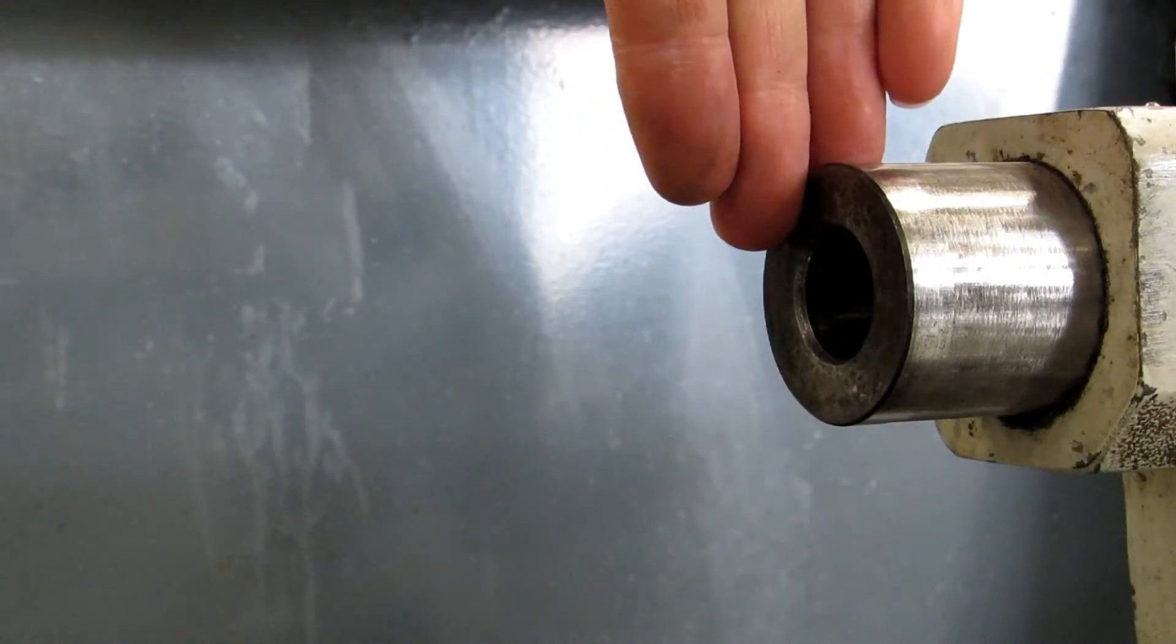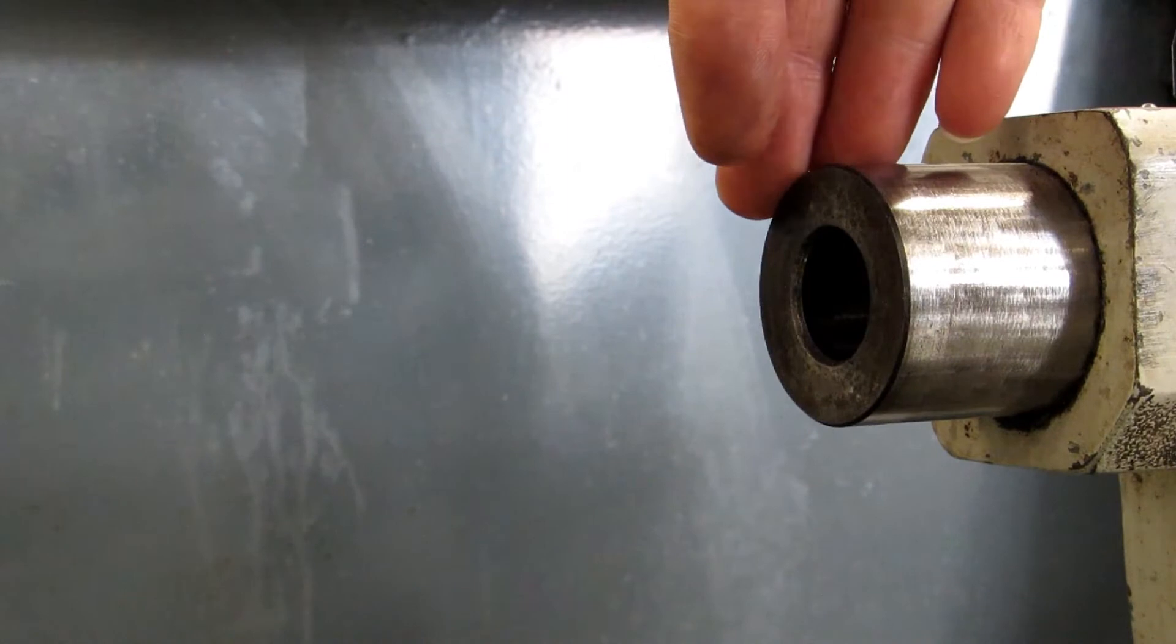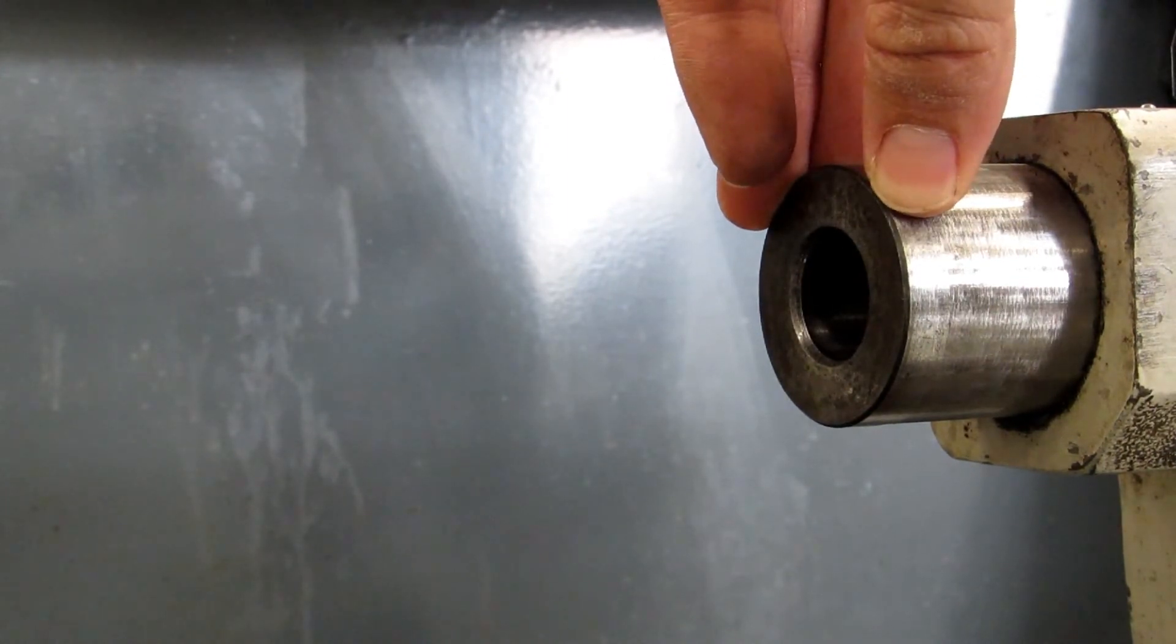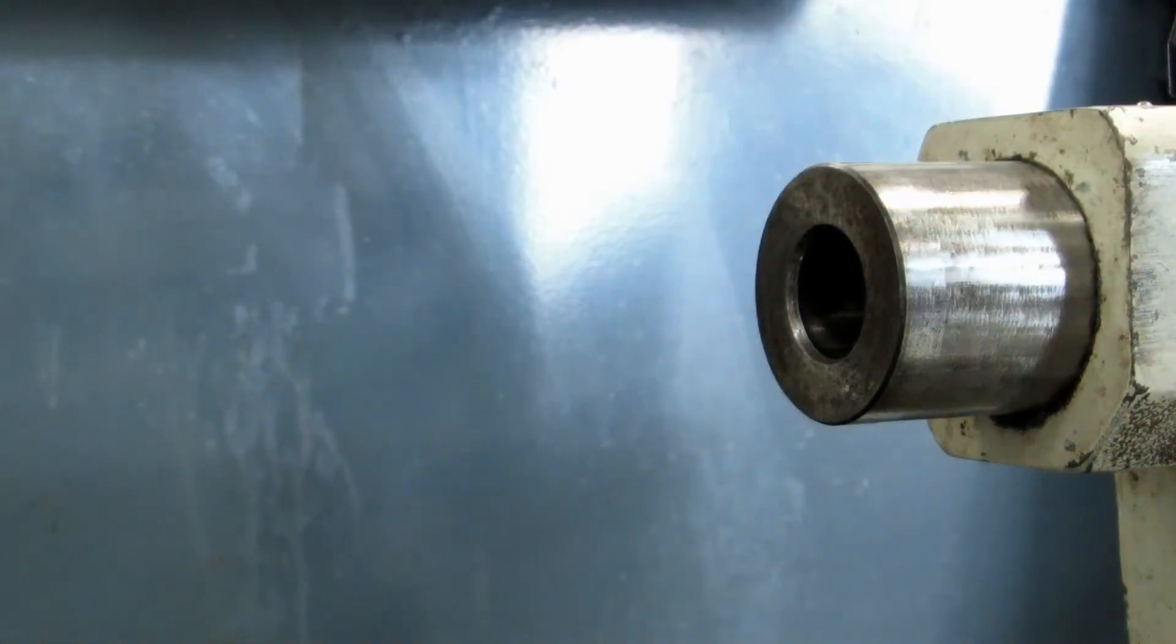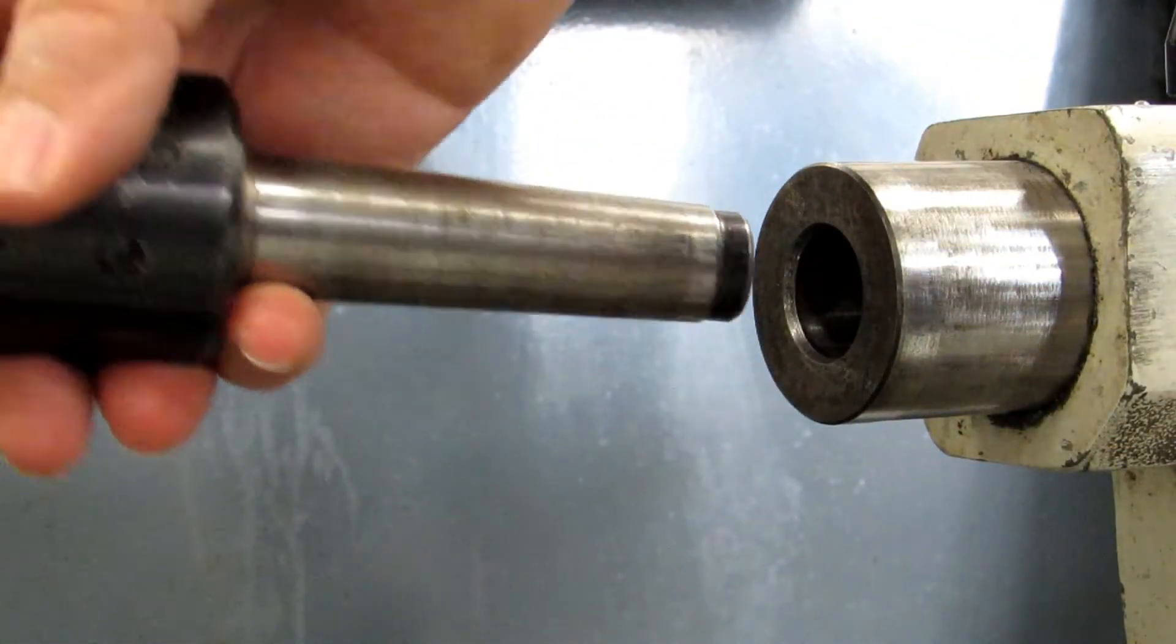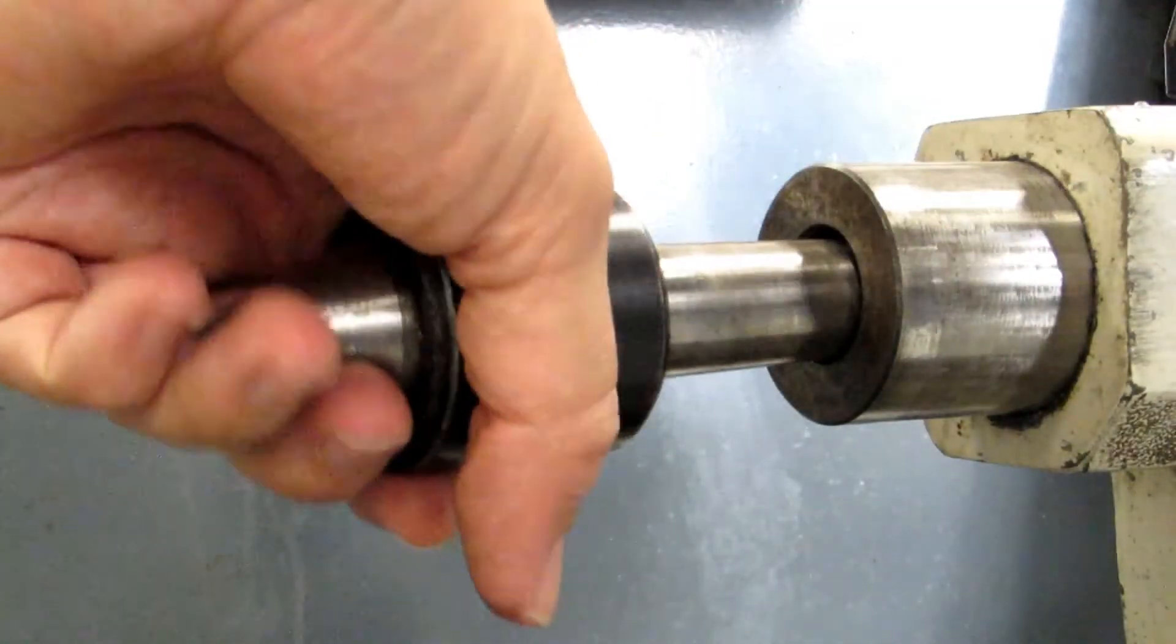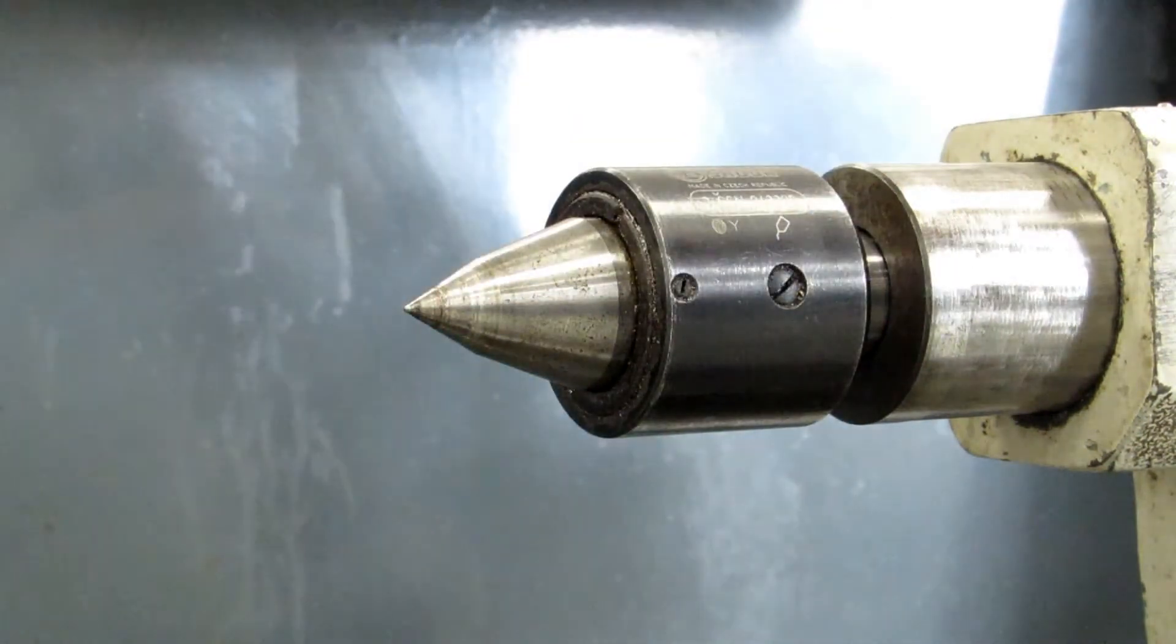The taper in the tailstock quill is a Morse III for this machine. And that is the same as every other lathe in the shop except for the large LeBlond, which we'll do in a separate video. So if you're putting your live center or your drill chuck in, make sure it has a Morse III. And then give it a good smack inwards, just like that, to seat it.